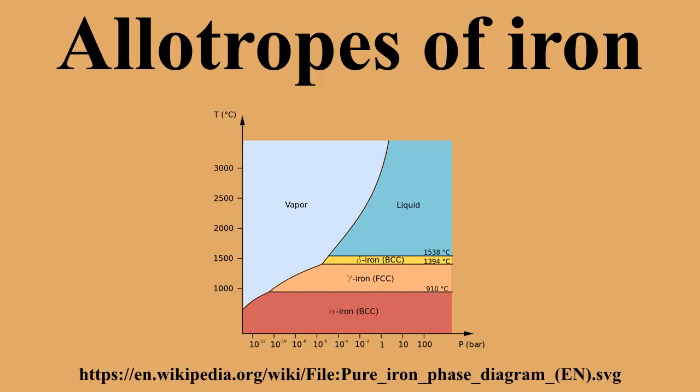The high-pressure phases of iron are important as models for the solid parts of planetary cores. The inner core of the Earth is generally assumed to consist essentially of a crystalline iron-nickel alloy with epsilon structure. The outer core surrounding the solid inner core is believed to be composed of liquid iron mixed with nickel and trace amounts of lighter elements.